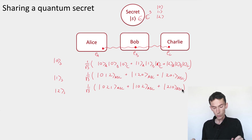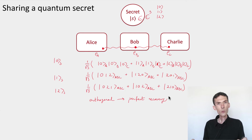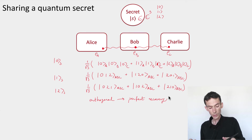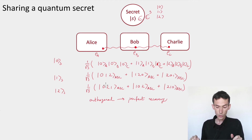So those are my three states. The first thing to verify is that these three states are orthogonal, so they let us recover the original secret S when S is a basis state. Now if the secret is not a basis state — if it's a superposition α₀|0⟩ + α₁|1⟩ + α₂|2⟩ — then we simply encode it into the same superposition of the three states: α₀ times the first state, α₁ times the second state, α₂ times the third state. You can check that in this way there is a perfect correspondence between any pure quantum state in ℂ³ and certain states shared between Alice, Bob, and Charlie, so we can do perfect recovery.